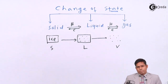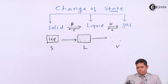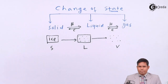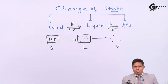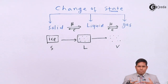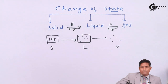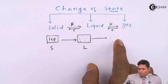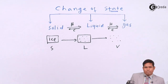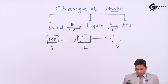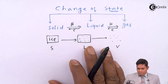When you supply heat, the molecules gain heat energy. In the case of a solid, the bonding is stronger — that bonding will break, the distance between molecules will increase, and they gain the tendency to flow, becoming a liquid. Further heating leads to vaporization, and they become gas, which has even more fluidity.